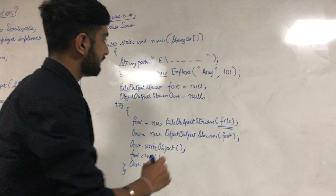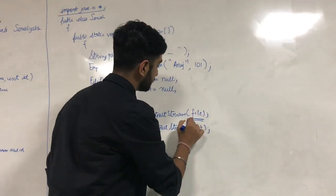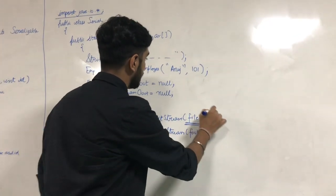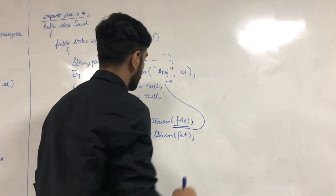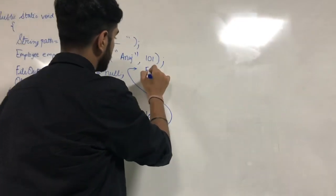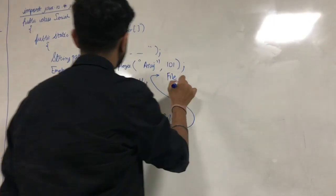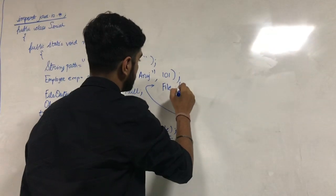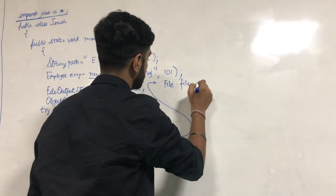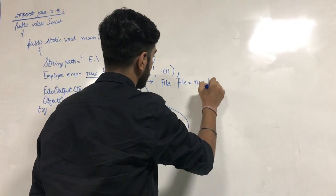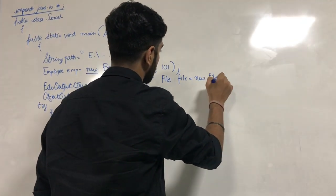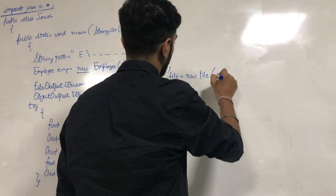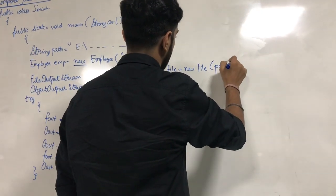We are done with the catch block, now everyone must be thinking from where this file has come. So, we will declare the file. We will create the file object here using the file package from import java.io.* which will be as follows: file = new File and with path within it.